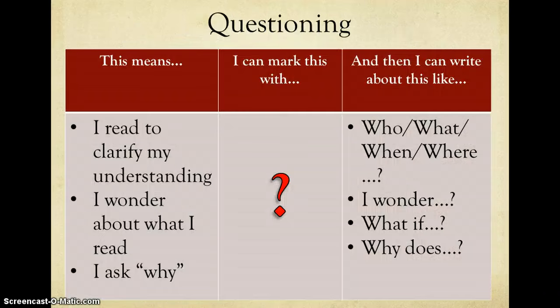That now brings us to questioning. When I'm questioning, I'm doing a variety of things, because questions can have different purposes. I can either be clarifying my understanding, I can be wondering about what I read, or I can be asking a why based on what I've read. A question annotation is indicated through the use of a question mark, and I can indicate this annotation through any of these sentence stems.